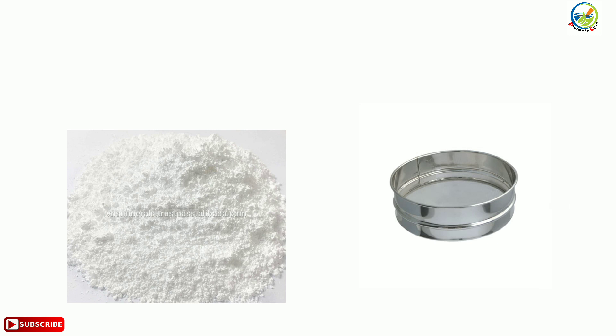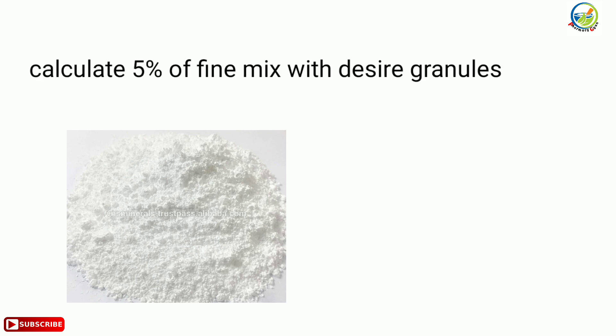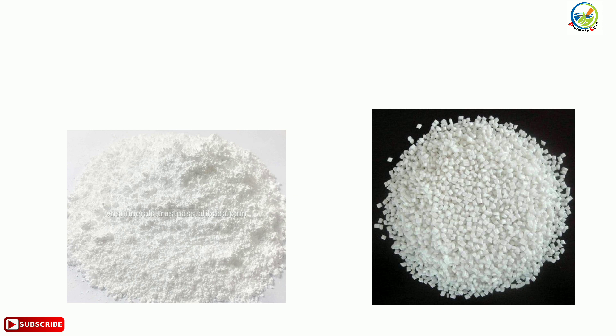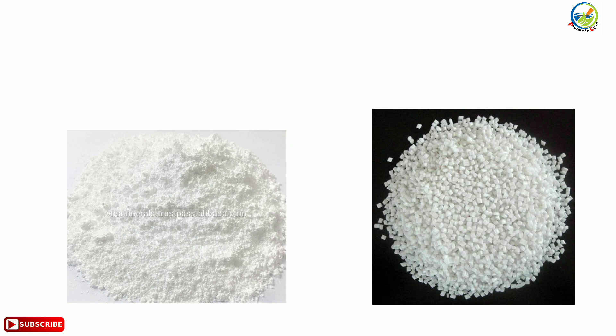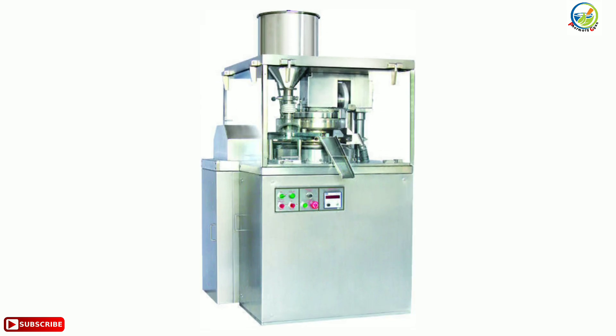Granules that pass through sieve number 44 are fines. Calculate 5% fines and mix with the desired granules. Add 1% talc and 1% lubricant to the granules. The granules are now ready for compression and are compressed in a single station tablet punching machine.